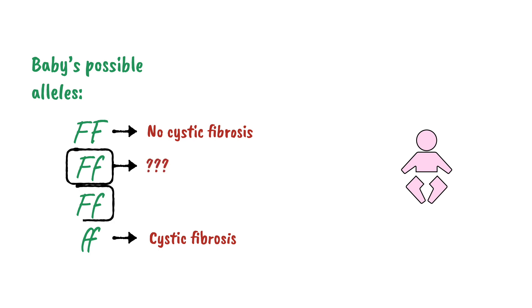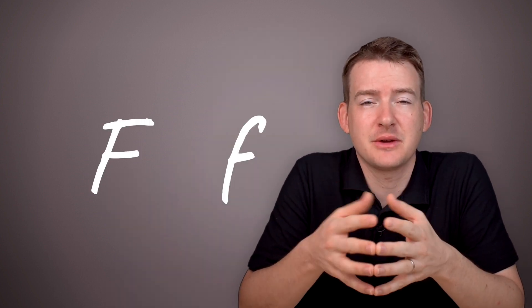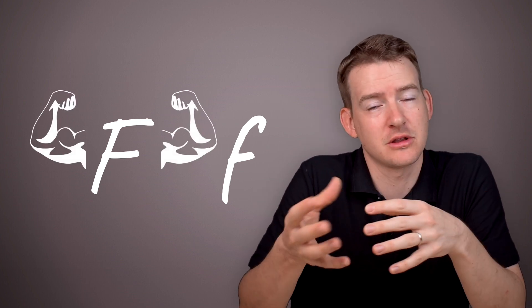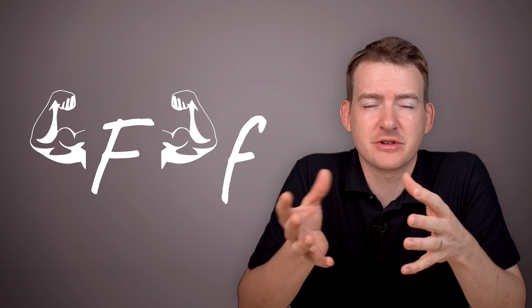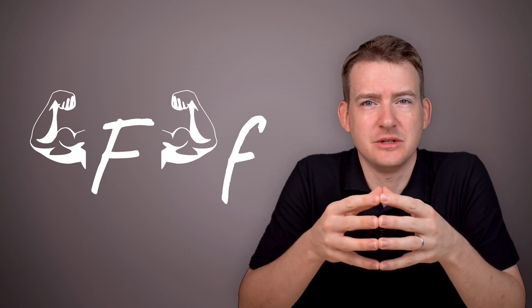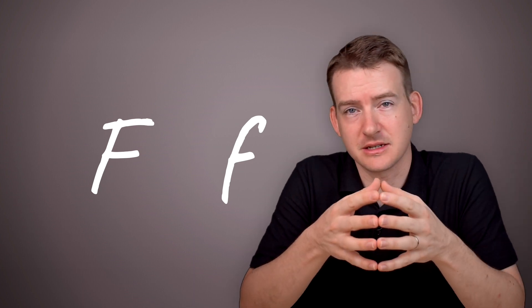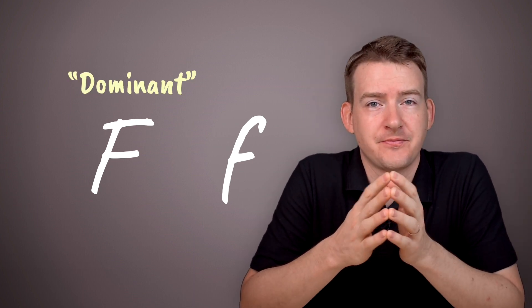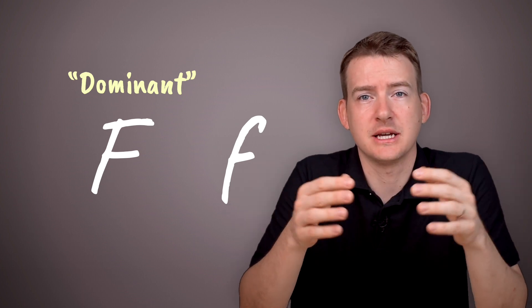But what about a child who inherits both alleles? There are only two possibilities here. The child either has or does not have cystic fibrosis. So which one is it? Well, in the case of this gene, like with many genes, one version of it is kind of stronger than the other one. Stronger is not a particularly scientific word to use. Alleles don't have muscles and they don't lift things. We actually say that one allele is dominant to the other, and the other one is said to be recessive.